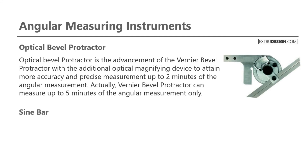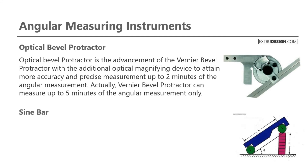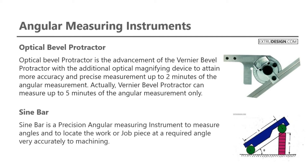The last one is the Sine Bar. Check the schematic diagram of the Sine Bar. The Sine Bar is a precision angular measuring instrument used to measure angles and to locate a workpiece at a required angle very accurately for machining.